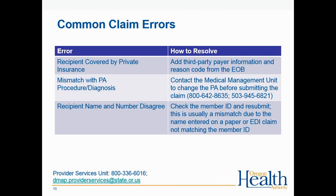Common claim errors are indicated on your EOB, remittance advice, or provider web portal as an ARC code. If the recipient is covered for private insurance, go to the third-party payer section and enter the adjustment reason code from the EOB. For a mismatch with PA procedure or diagnosis, contact the medical management unit to change the PA before submitting the claim. If recipient name and number disagree, check the member ID and resubmit — this is often a paper claim misread or a hyphenated name issue. Provider services unit contact information is at the bottom of the page.